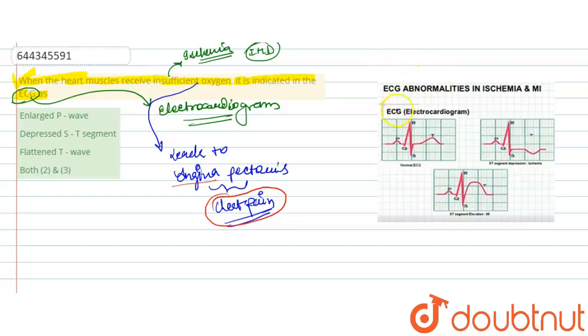You can see this particular picture represents a normal condition. The normal PQRST waves are properly represented here showing good functioning of heart.